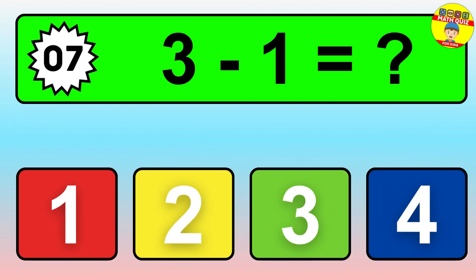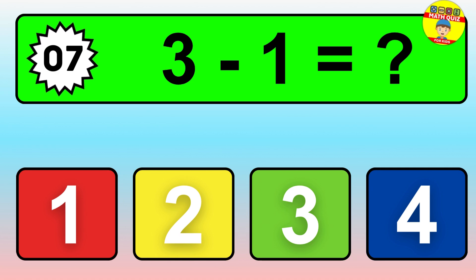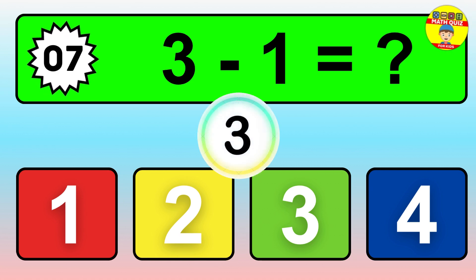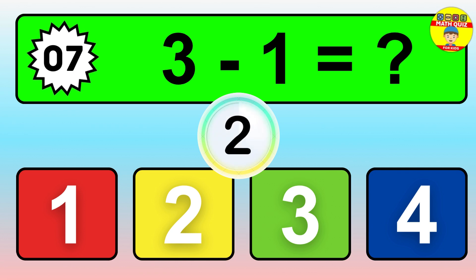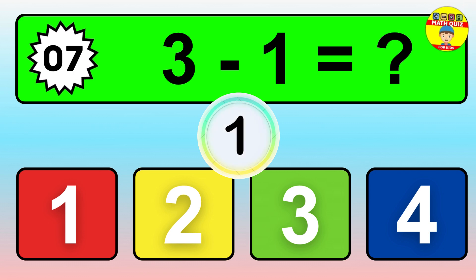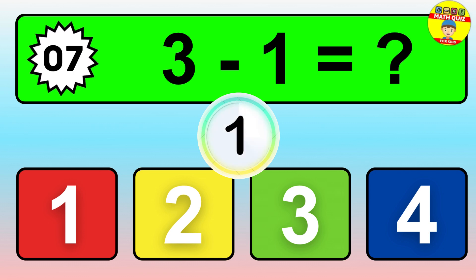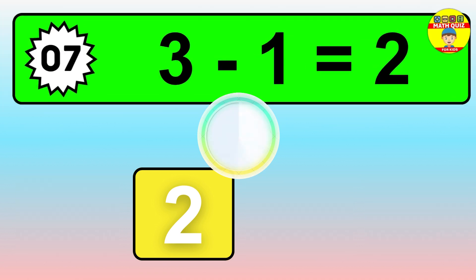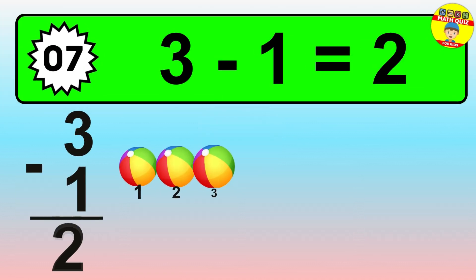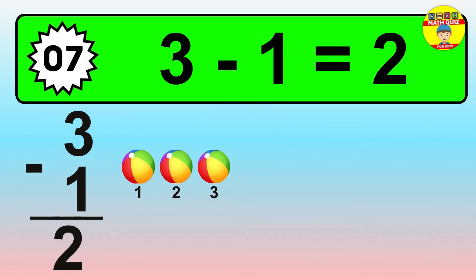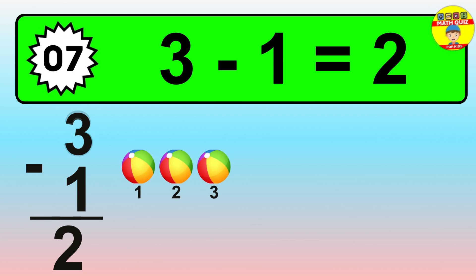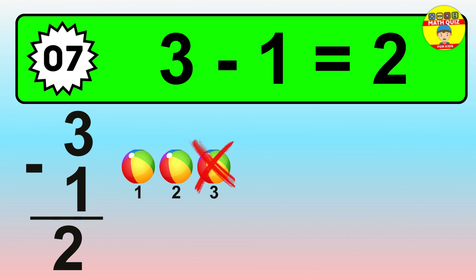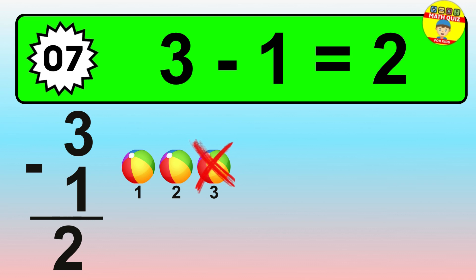Question seven: three minus one equals what? So the answer is three minus one is two. Let's count it: one, two.